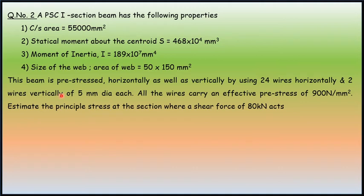This beam is pre-stressed horizontally as well as vertically by using 24 wires horizontally and 2 wires of 5mm dia each. So in this problem we see that it is vertically and horizontally pre-stressed. Estimate the principal stresses at the section where a shear force of 80 kN is acting.